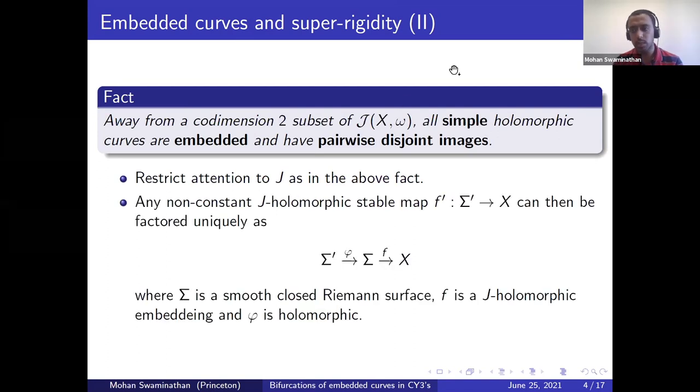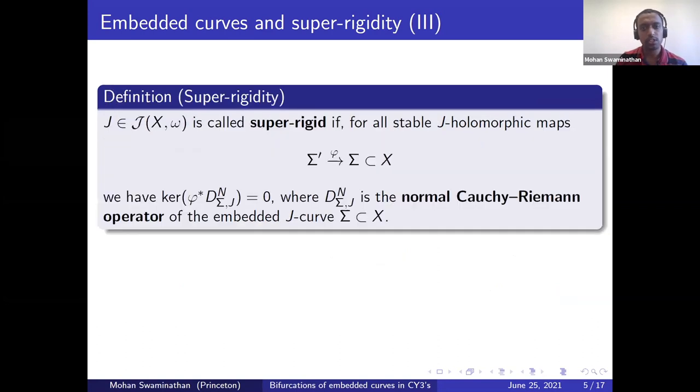For such J, we can immediately note that any stable holomorphic map must have its image on an embedded smooth holomorphic curve. More precisely, if f' from Σ' to X is any non-constant stable map, then we can factorize it uniquely as Σ' to Σ, which is a map of Riemann surfaces. Σ' might be singular, but Σ is smooth. And f from Σ to X is a smooth holomorphic embedding.